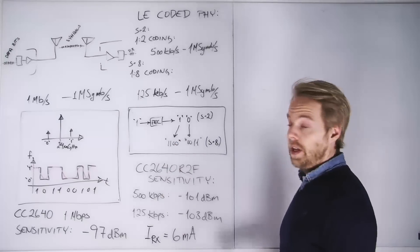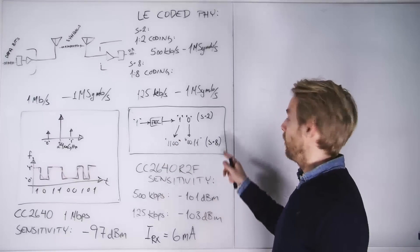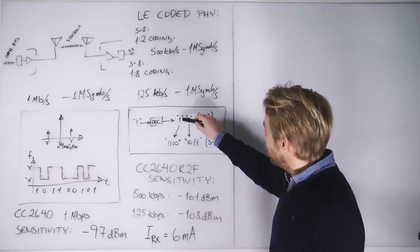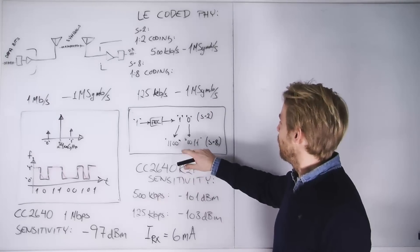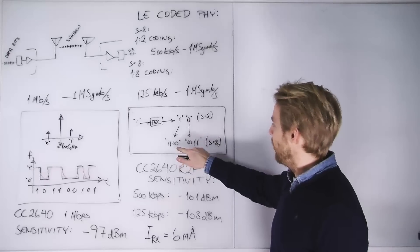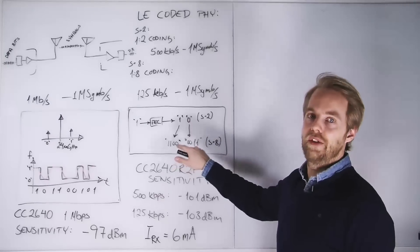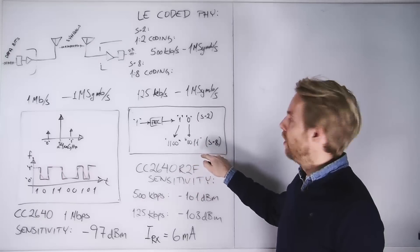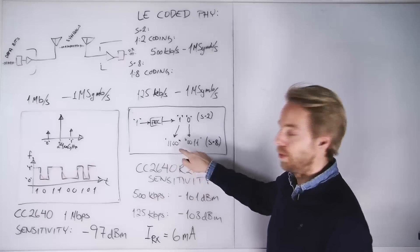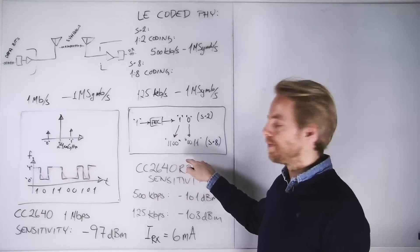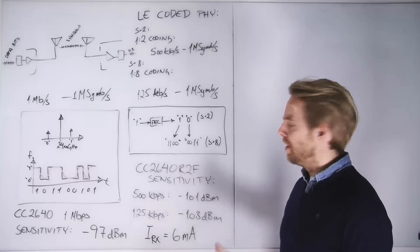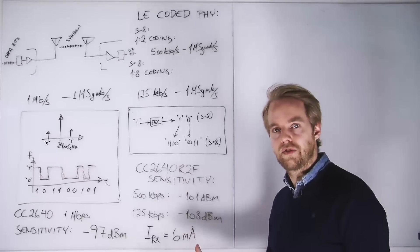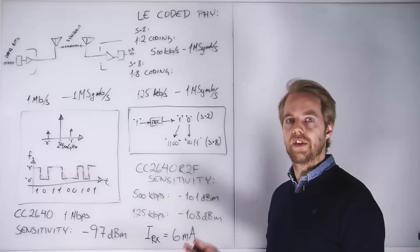Now for the eight symbols per data bit, or as Bluetooth SIG calls it, S equals eight coding, each of these are again expanded by one to four. So a one is always represented as 1100, and a zero is always represented as 0011. So now we have one data bit being converted to eight symbols. The basic idea here is that this will make it easier for your receiver to interpret your data stream over noise, and that improves sensitivity.